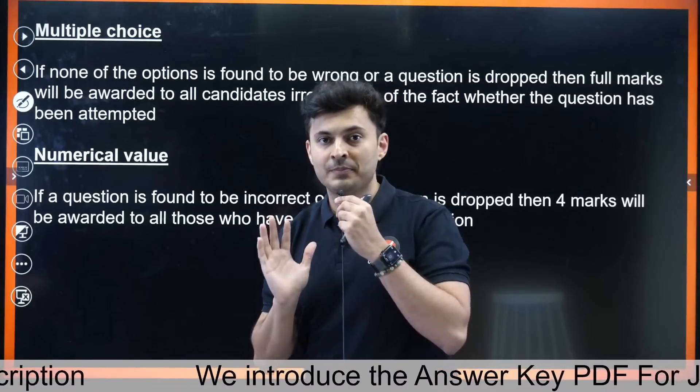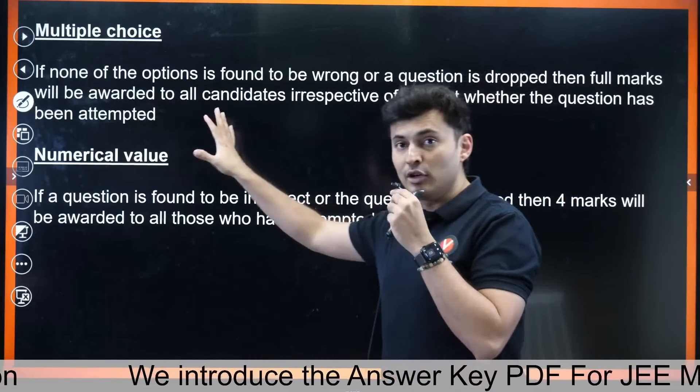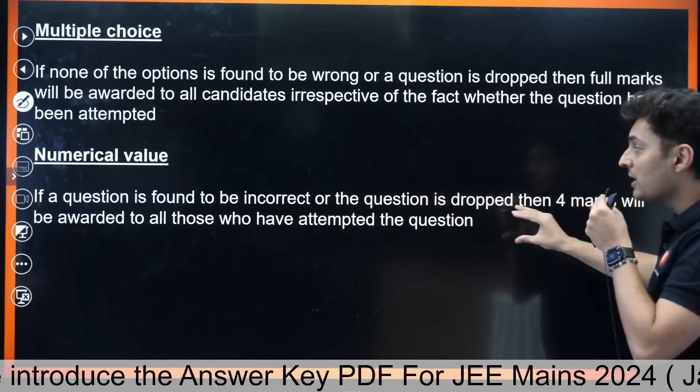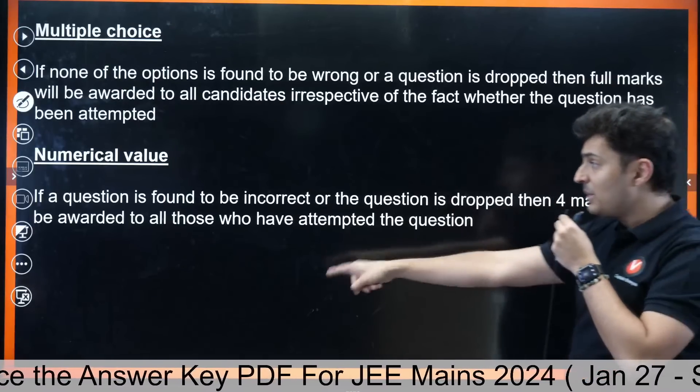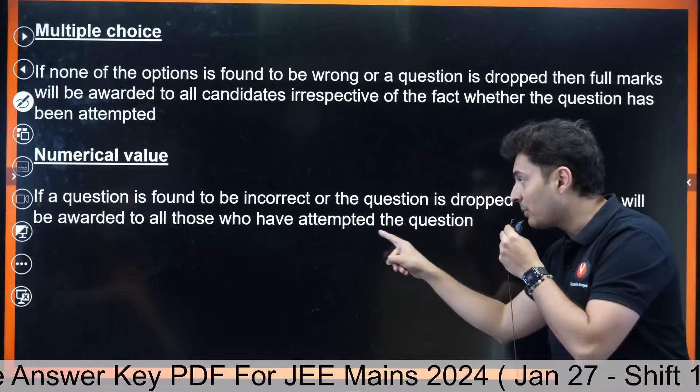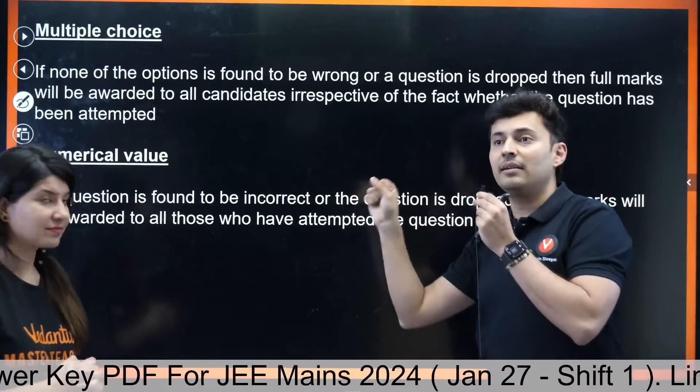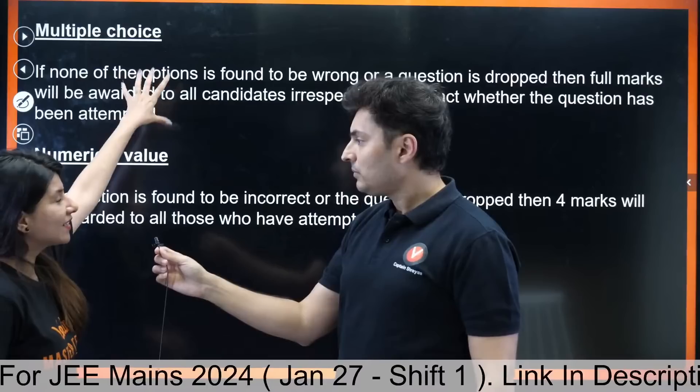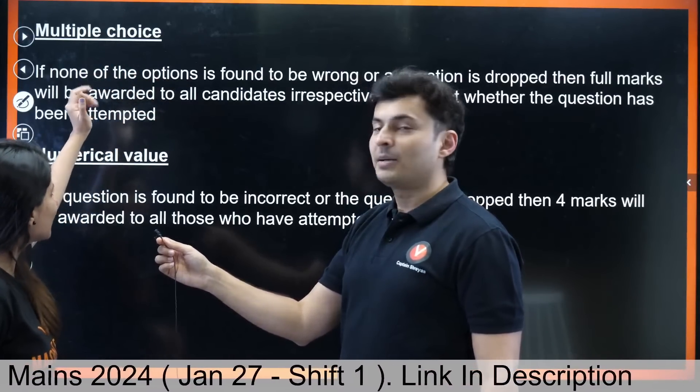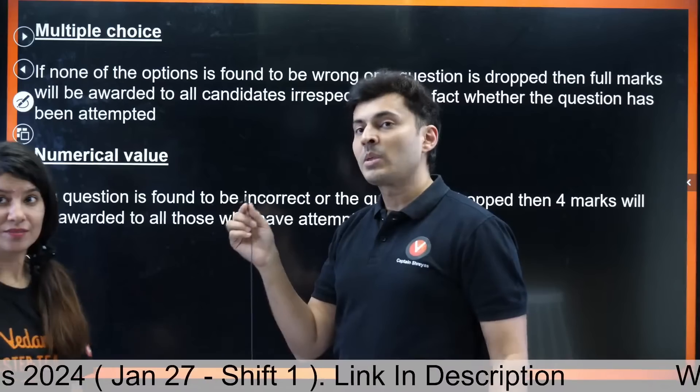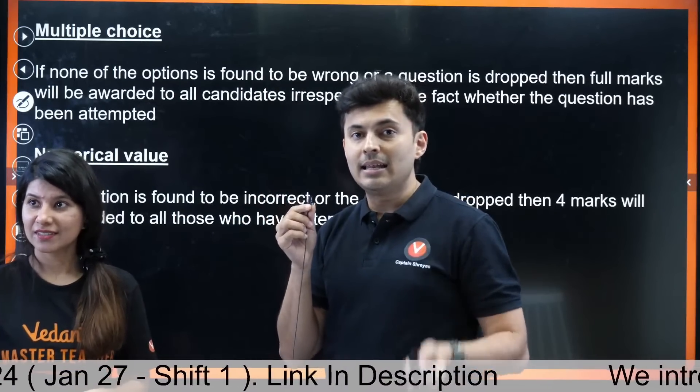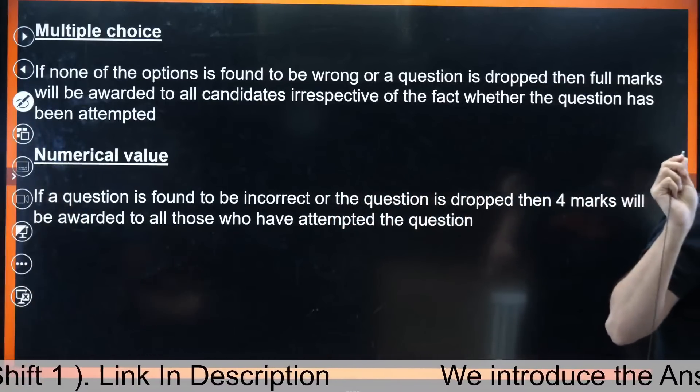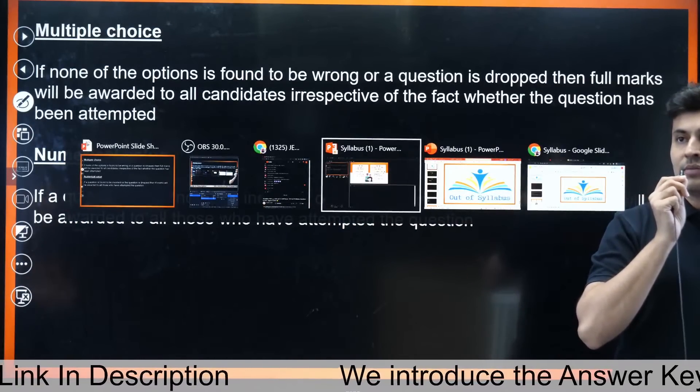We know already what you're going to ask, so we made this slide looking at the NTA website, the JEE Mains website. There is one very interesting thing, and the way bonuses are awarded in multiple choice and numerical value are completely different. I didn't know this - this blew my mind. If none of the options is found to be wrong or a question is dropped, then full marks will be awarded to all candidates irrespective of the fact whether the question has been attempted or not. So if that question came in objective multiple type, whether you attempted or not, you will get bonus marks.